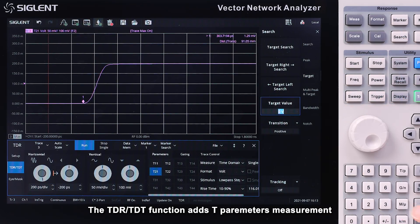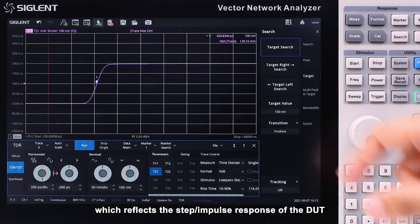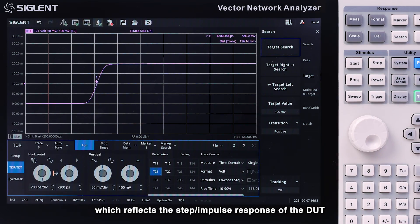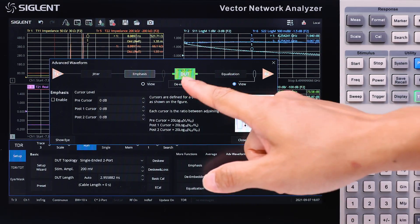The TDR TDT function adds T parameter measurements, which reflect the step impulse response of the device under test. And with the advanced waveform settings, it's more useful than the TDA option.